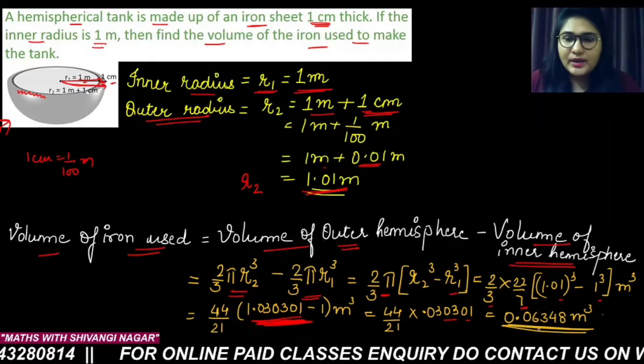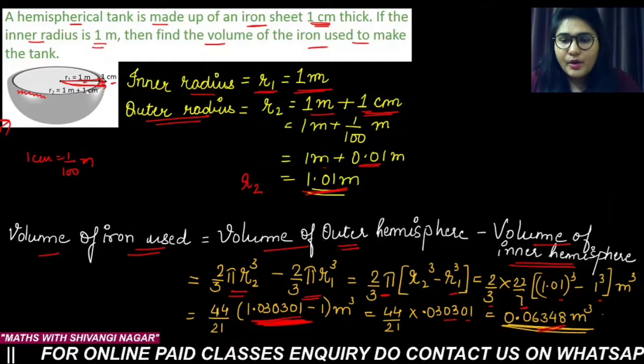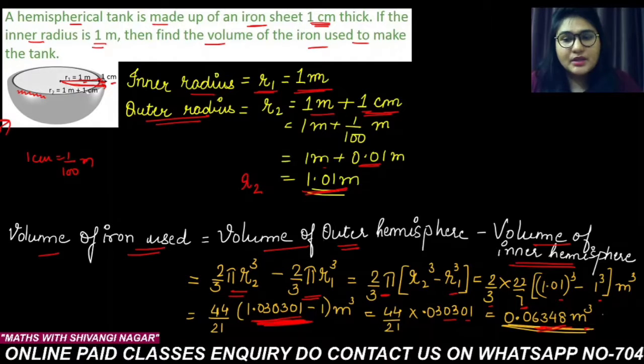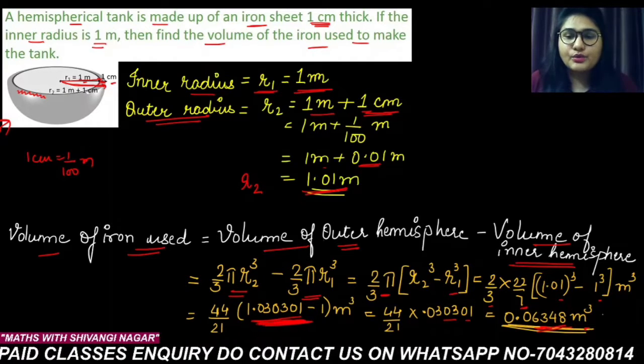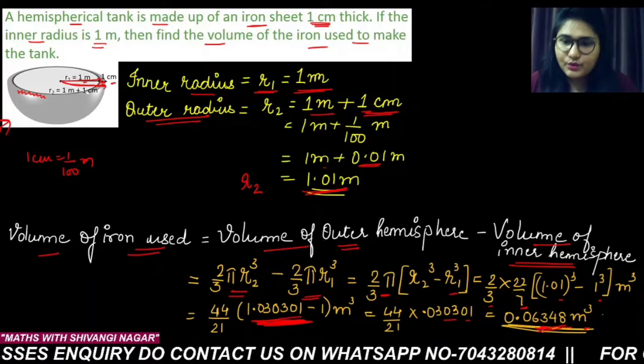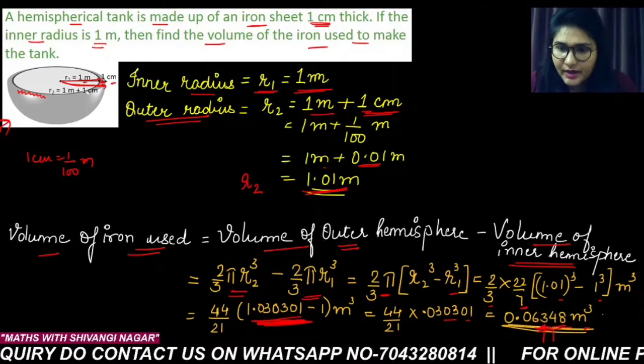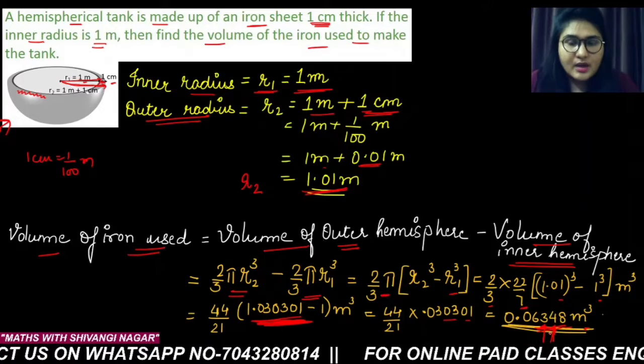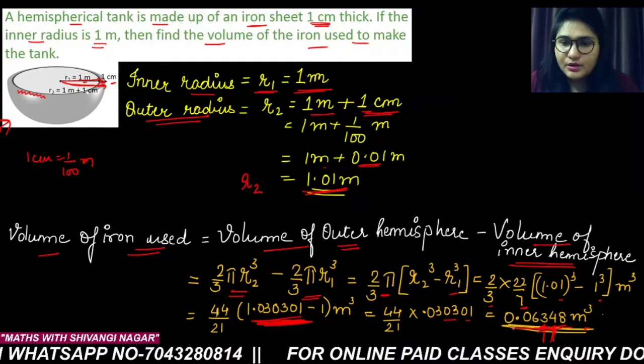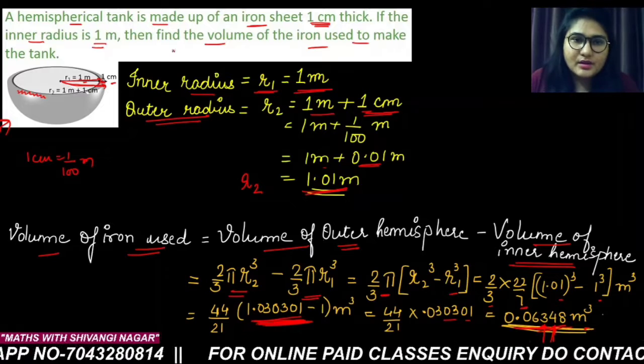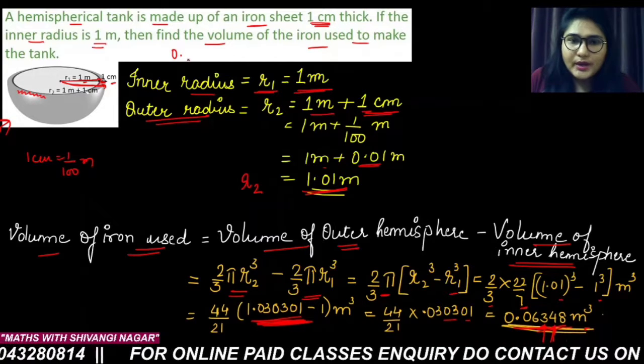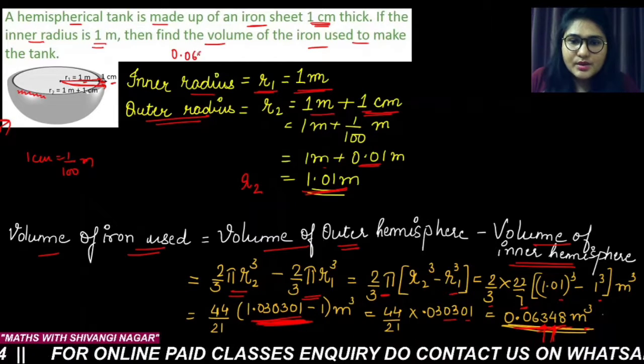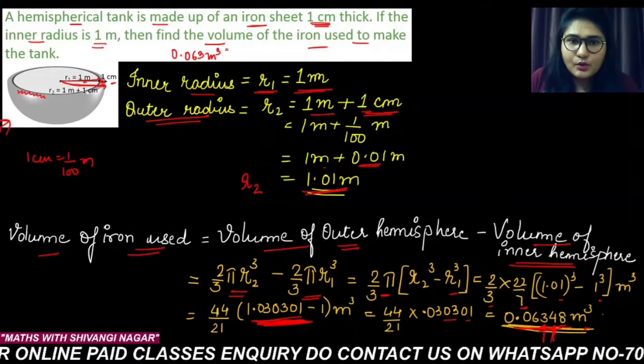You will get ultimately 0.06348 meter cube. And if you have to write it up to 3 decimals, what you have to do? You just have to see the third number and the fourth number. If you see the fourth number, you have 4 over here. It is less than 5, so your answer reduces in the approximation form. So your answer reduces into 0.063 meter cube, and don't forget to write the approximate here. Clear?